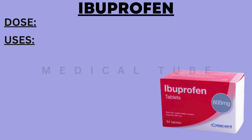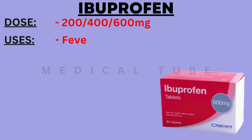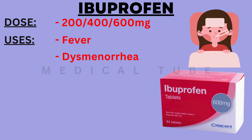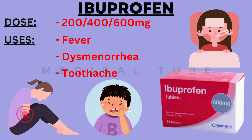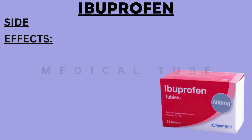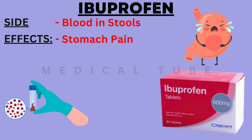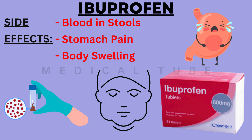The next drug is Ibuprofen. The dose of Ibuprofen is 200 mg, 400 mg or 600 mg. It is used in fever, dysmenorrhea or painful menstruation and toothache. The side effects of Ibuprofen are blood in stools, stomach pain and body swelling, i.e. edema.